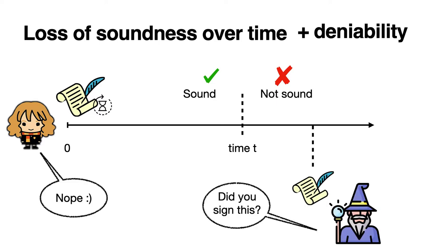This gives us a notion of deniability too. That is, after time t, Alice could claim that anyone could have made this unsound signature without her private key.